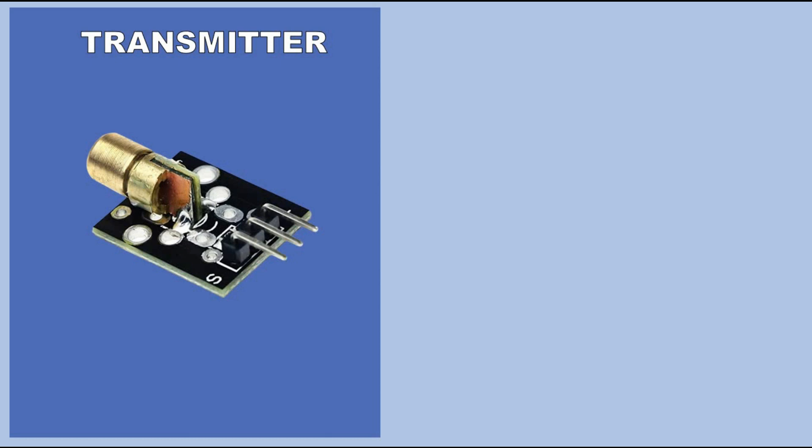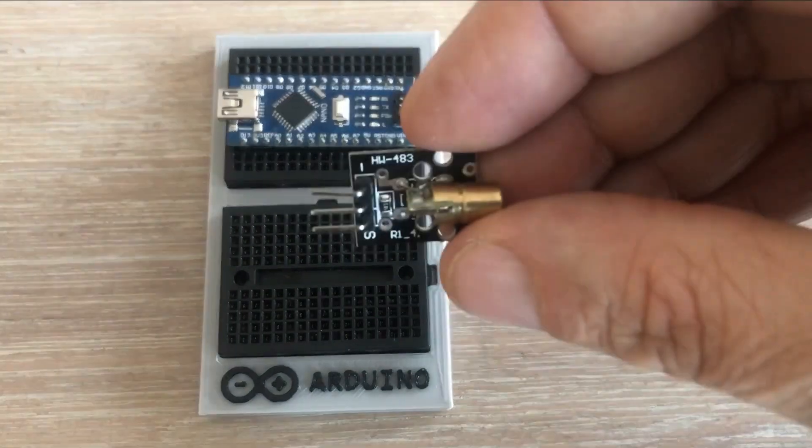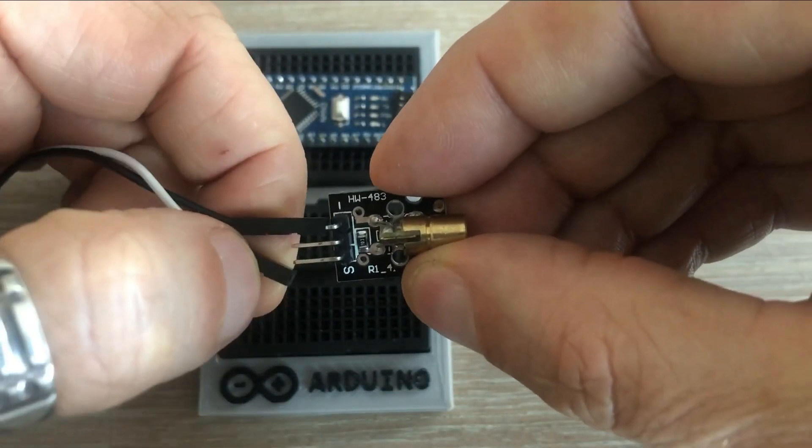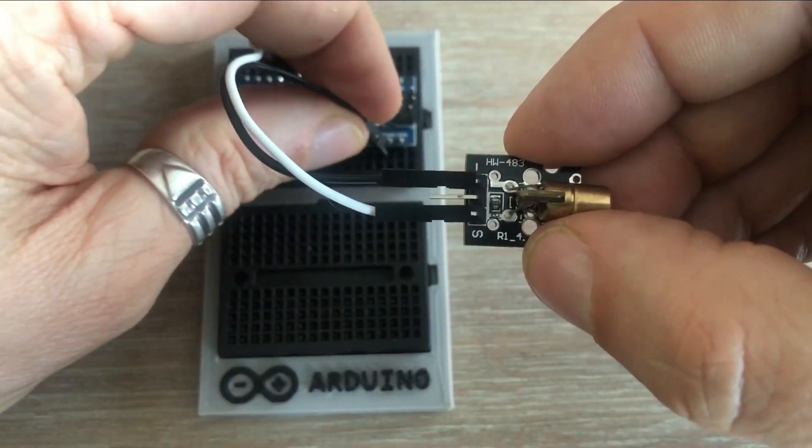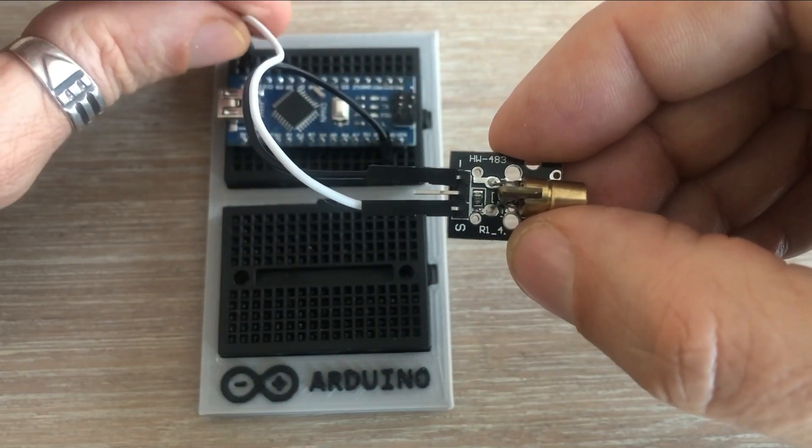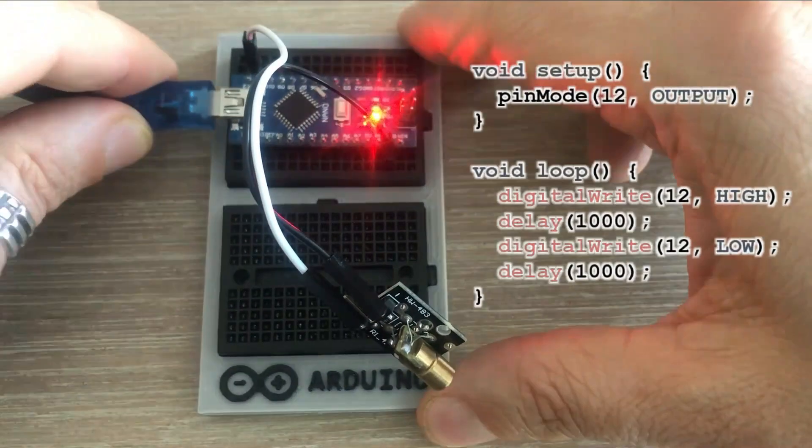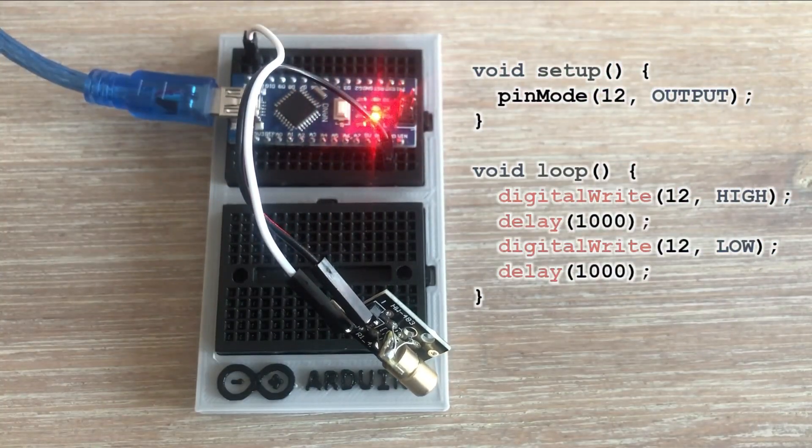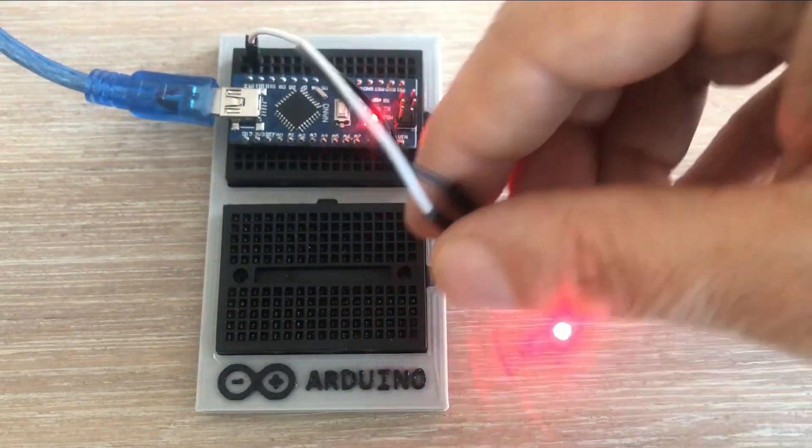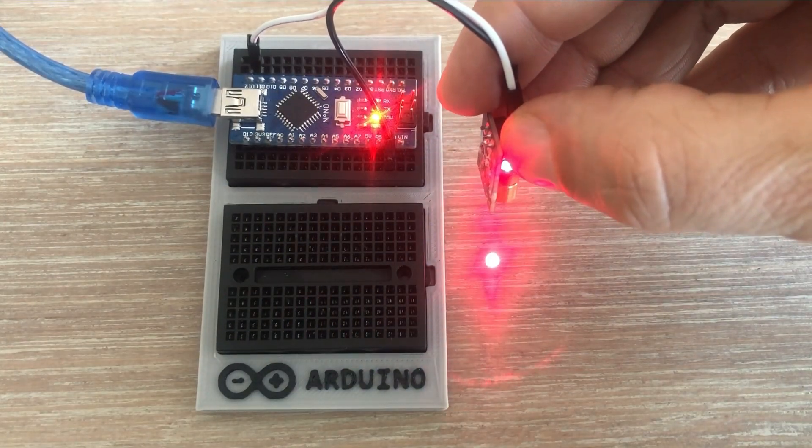So let's go back to our modules, starting with a laser transmitter. The connectivity is super simple. We need two jumper wires to connect the module ground to Arduino ground. The middle pin is not used. We connect module signal pin to any Arduino digital pin. Now we can control the laser diode just like you would control any normal LED. Let's load the standard blink sketch and run the program. And there you have it.